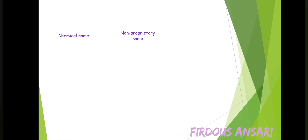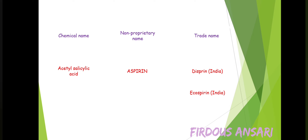Now let's look at an example of the chemical name, non-proprietary name, and trade name. The chemical constituent is Acetylsalicylic Acid. We know this chemical constituent in the form of Aspirin — that is the non-proprietary or generic name. And if you go to any medical store or pharmacy, you ask for the trade name, like Dispirin or Ecospirin. Both Dispirin and Ecospirin contain the same salt, Aspirin, which in turn contains the chemical constituent Acetylsalicylic Acid.